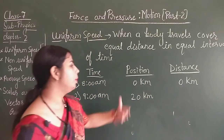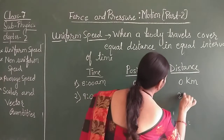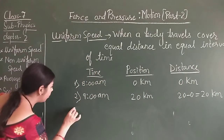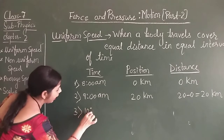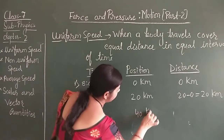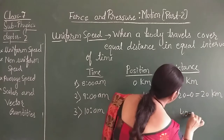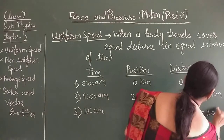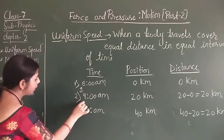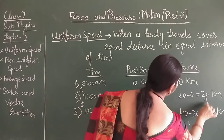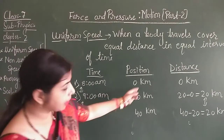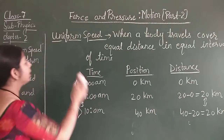If the body travels 20 kilometers, that means the distance is 20 minus 0, equal to 20 kilometers. Now, in the next one hour, that means at 10 a.m., the body covers 40 kilometers. That means 40 minus 20 is equal to 20 kilometers. The time interval is one hour and the distance is equal. So in equal intervals of time, the distance is equal — that is uniform speed.